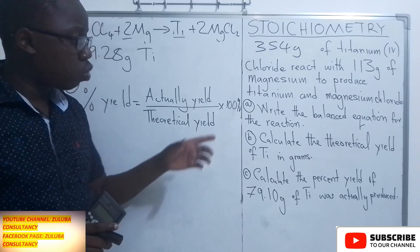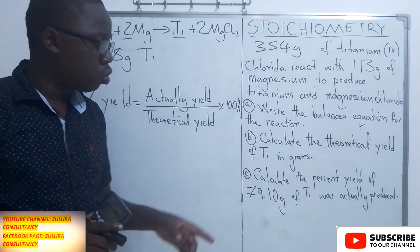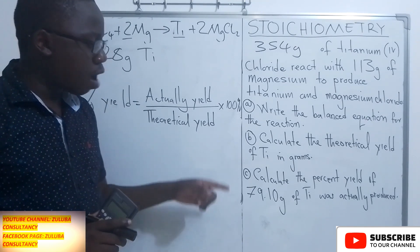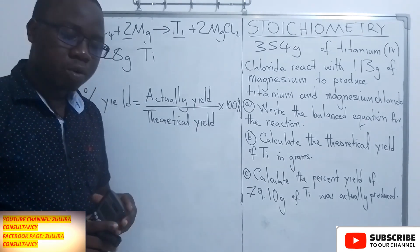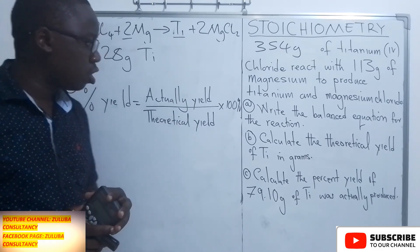The third question is asking us to calculate the percentage yield if 79.10 grams of titanium was actually produced. How do we calculate the percentage yield?